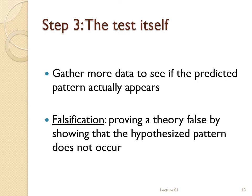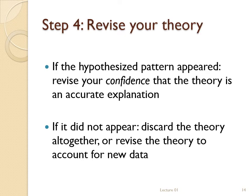If the predicted pattern of data doesn't appear, step four becomes revising the theory to explain the new observations, then generating a new hypothesis and going back to step three. Most often, what scientists find with extremely complex theories like evolution is that the theory is true in some ways and false in others. Suppose evolution does occur but not via natural selection — several 19th century scholars held such views. When that happens, we don't throw out the whole theory and start from scratch; instead, we revise the parts that need revision, keep the parts consistent with the data, and improve our explanations over time.